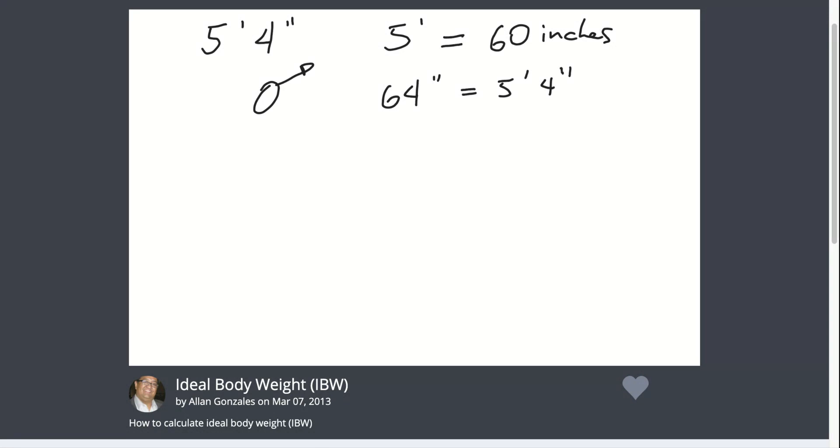So basically, in order to calculate the ideal body weight, you would need to get 60 inches. Again, if it's male, so this is 106. And then for 4 inches, what you're doing now is 4 times 6, which is 24. So basically, the ideal body weight for this 5'4" male patient is 130 pounds.